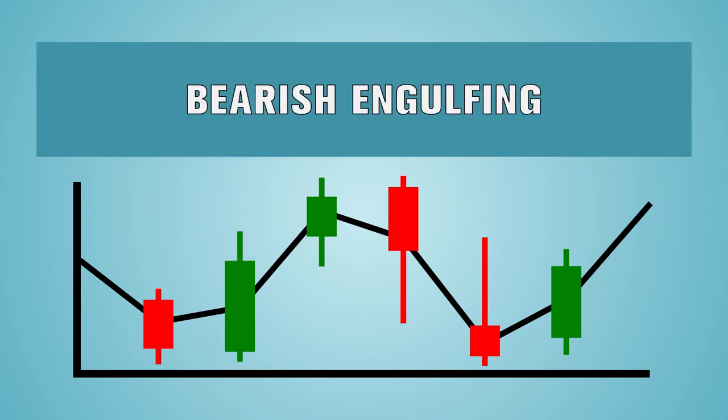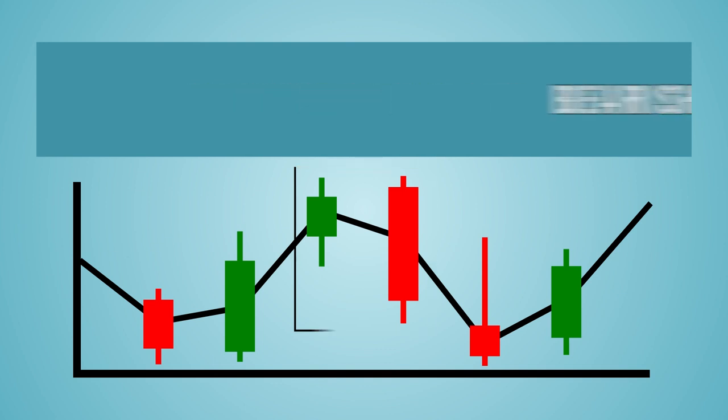A bearish engulfing is the opposite, when a green candle is followed by a larger red one, which engulfs the preceding green candle. The larger the proportion of the engulfing candle, the stronger the indication is to sell.